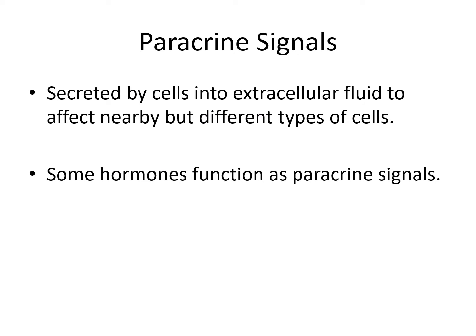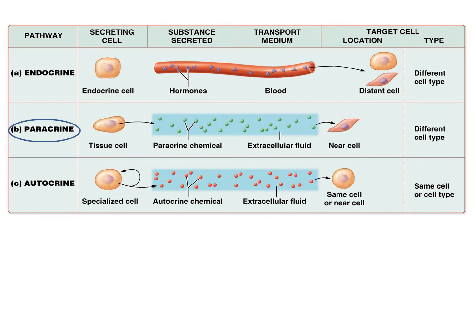Paracrine signals are secreted by nearby cells of different types into the extracellular fluid. Just like a paramedic is a nearby physician, a paracrine signal affects nearby cells that are different cell types. Some hormones act as paracrine signals — here a tissue cell secretes its paracrine chemical into the extracellular fluid, affecting nearby different cells.